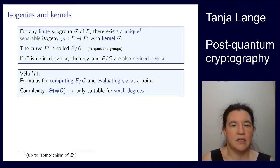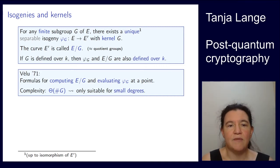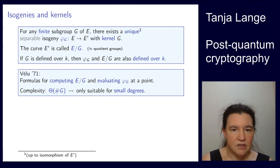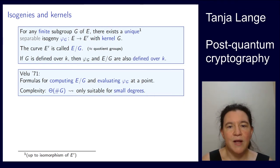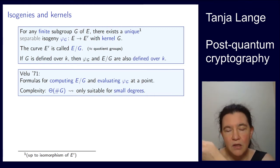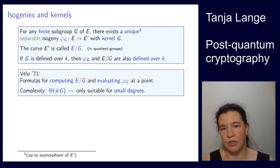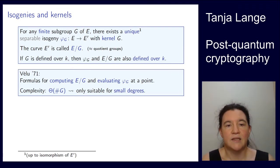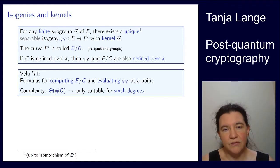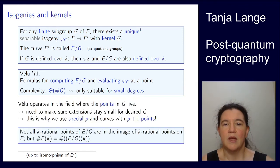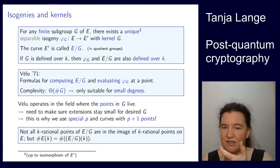The way we compute this is due to Vélu from 1971, who shows how to do this explicitly. He takes the points on the subgroup and — with complexity roughly proportional to the number of points — computes the isogeny and evaluates it at a point, so you can push a point from E to E prime through the isogeny. But this costs ℓ steps for a group of order ℓ, meaning we can only do this efficiently for small degrees.